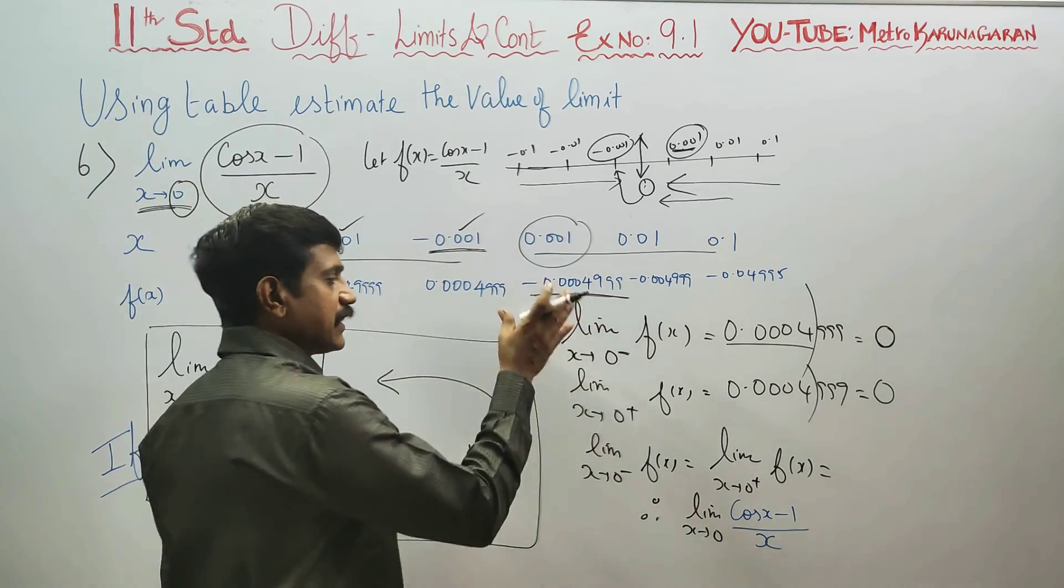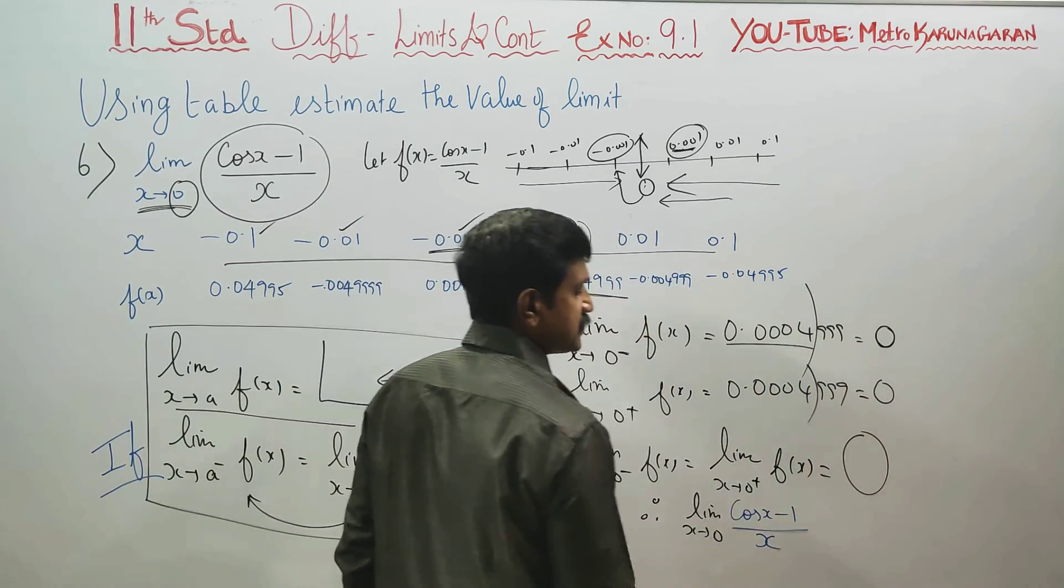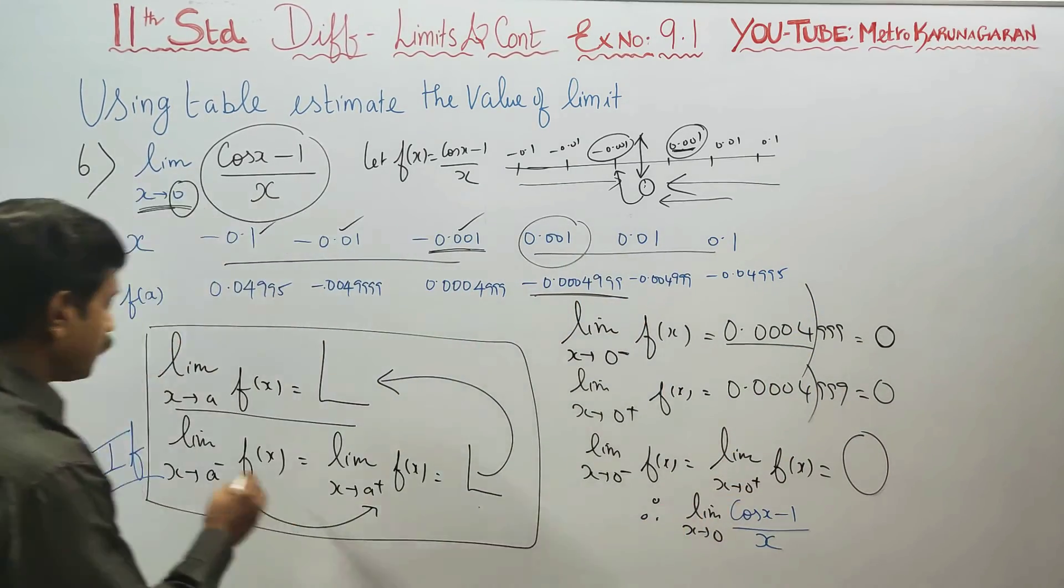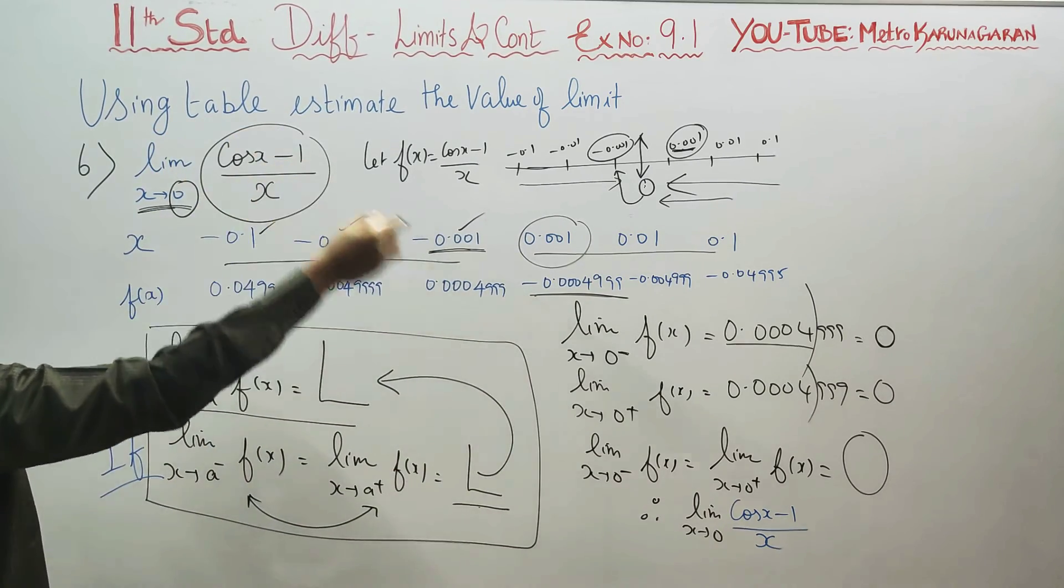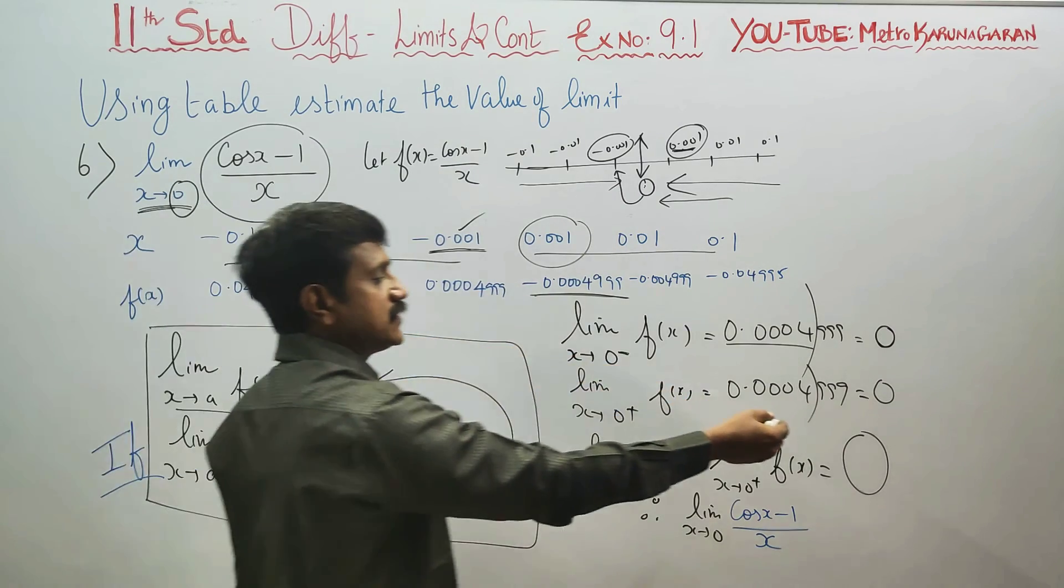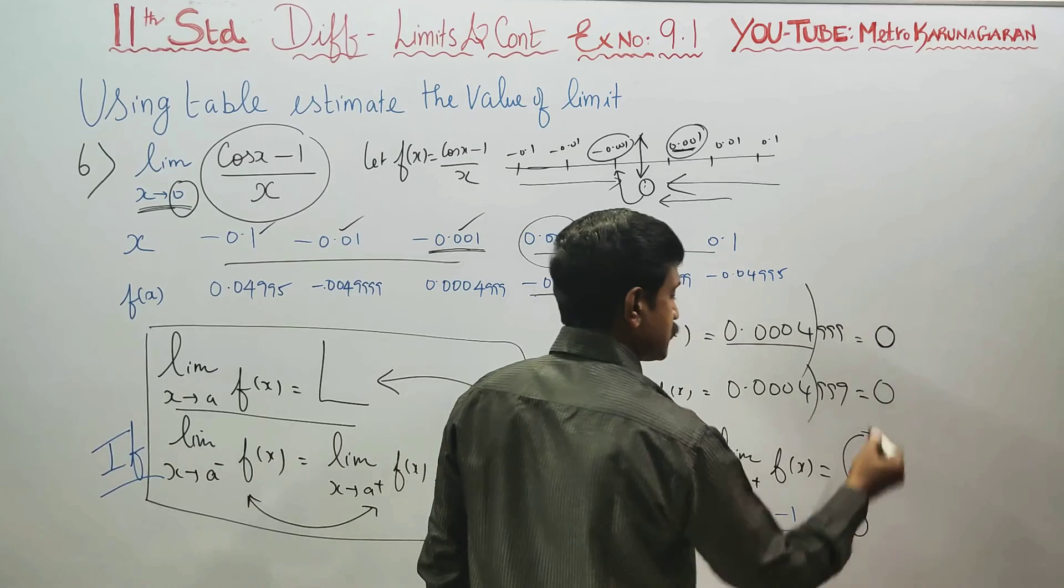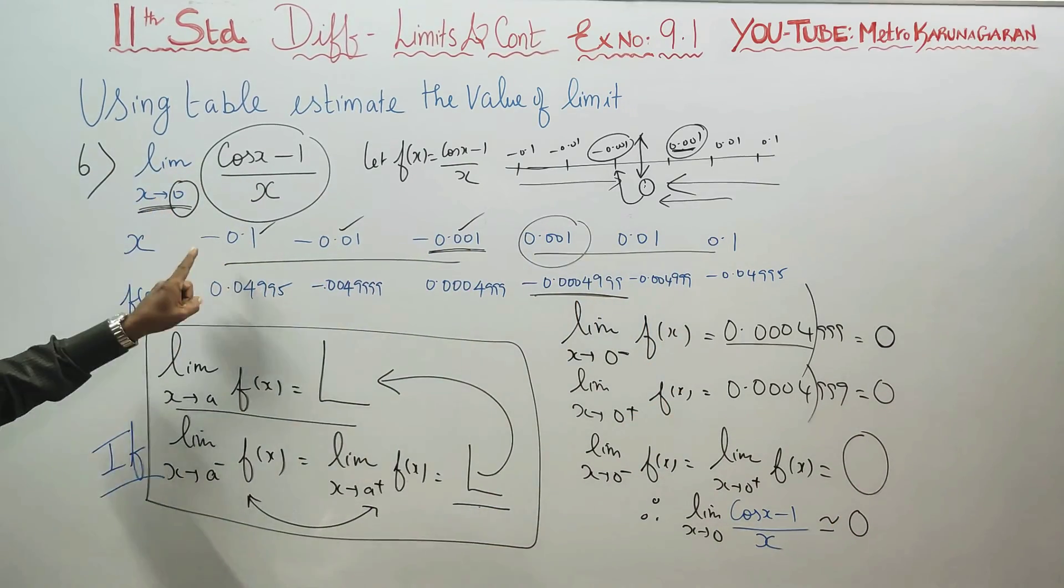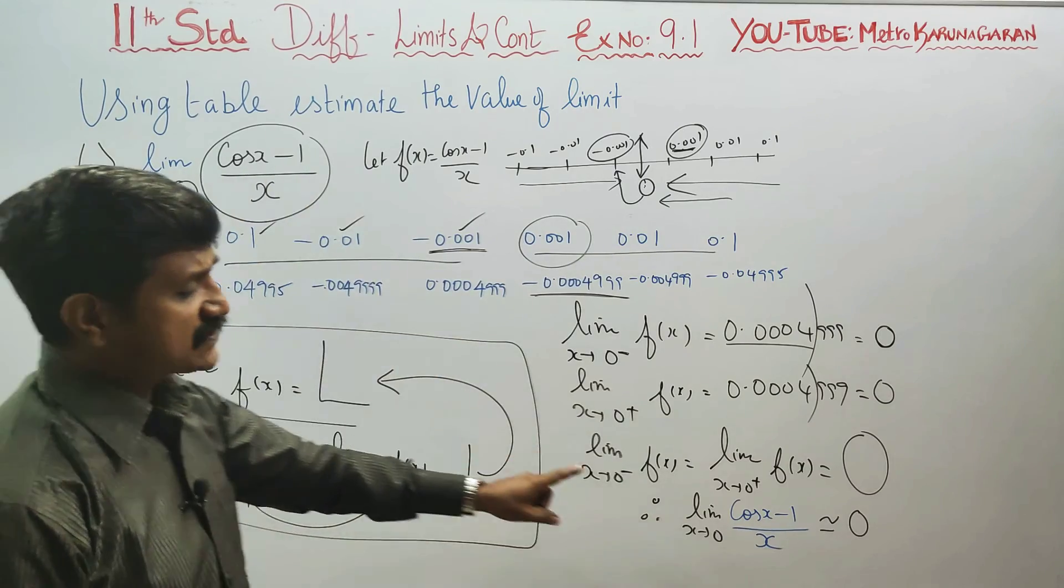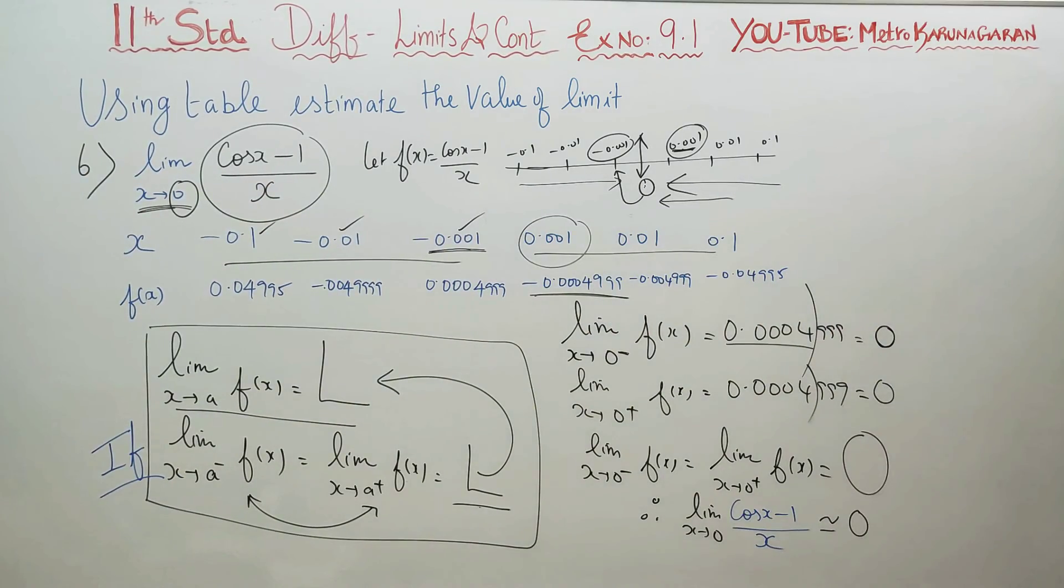Therefore, left hand limit equals right hand limit equals 0 for this problem. Okay, thank you.